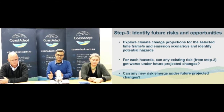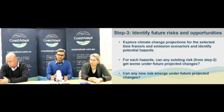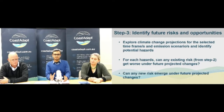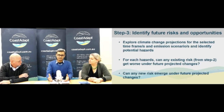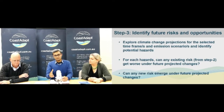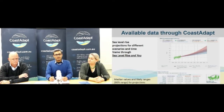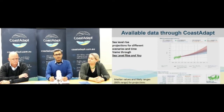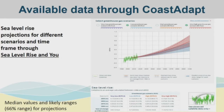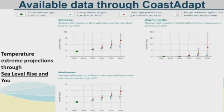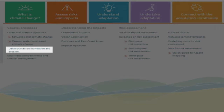So in step two you have identified your existing risks. Now step three is about identifying your future climate change related risk and opportunities. For example, let's say in step one you decided to investigate a high emission scenario at 2050, and in step two you identified some areas that have already been getting flooded during high tide. In step three you would want to investigate an inundation map of 2050 under a high emission scenario and identify areas that might be at risk in future. You can do the same thing for other types of hazards like heat waves or erosion to identify any future at-risk areas or assets. There are a number of datasets you can use from Coast ADAPT for this purpose, like sea level rise projections for each coastal council, inundation maps for each coastal council, and temperature and rainfall extreme projections — also available for each coastal council in Australia.